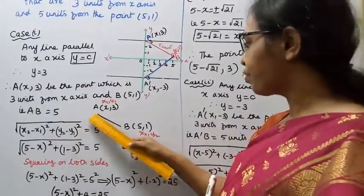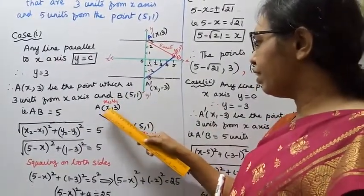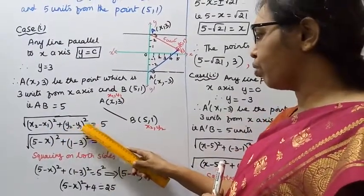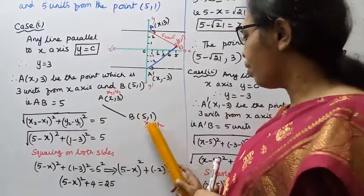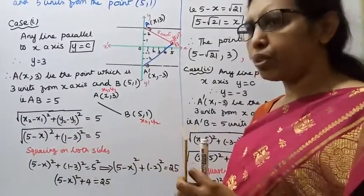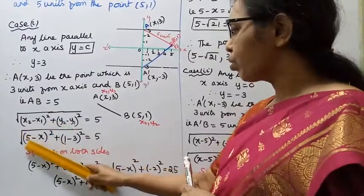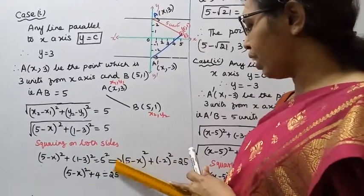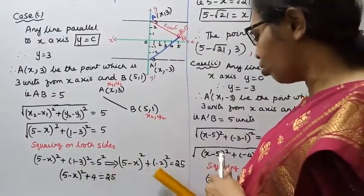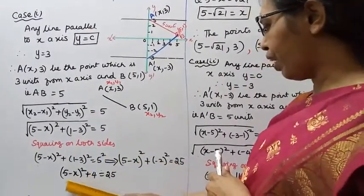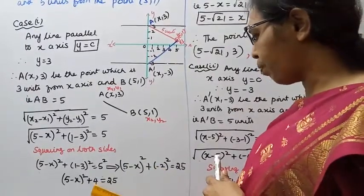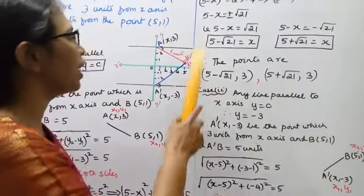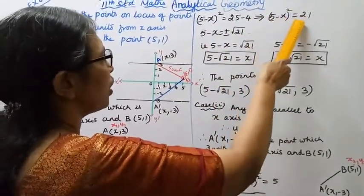A is (x, 3) and B is (5, 1). Using the distance formula: AB = √[(x₂ - x₁)² + (y₂ - y₁)²] = 5. So √[(5 - x)² + (1 - 3)²] = 5. Squaring both sides: (5 - x)² + (1 - 3)² = 5². That gives (5 - x)² + (-2)² = 25, so (5 - x)² + 4 = 25, therefore (5 - x)² = 21.